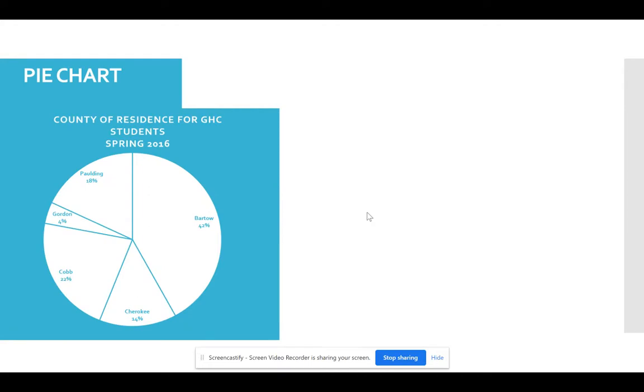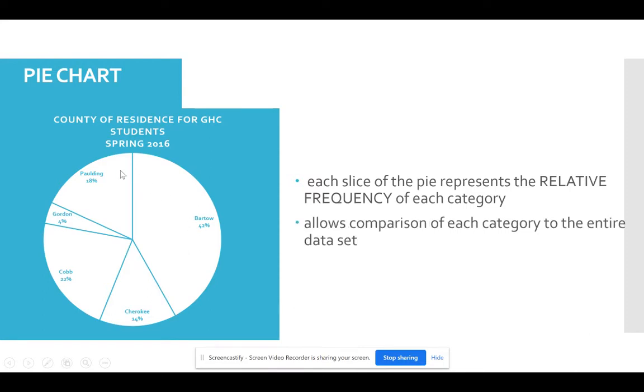Also, with qualitative data, the other type chart that you'll see used a lot is a pie chart. With a pie chart, each slice of the pie represents the relative frequency or the percentage of each category. And it allows you to see how each category compares to the whole.